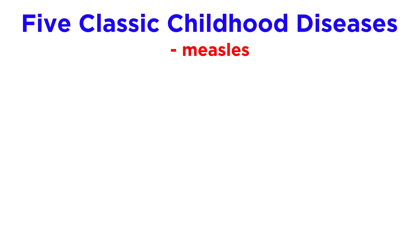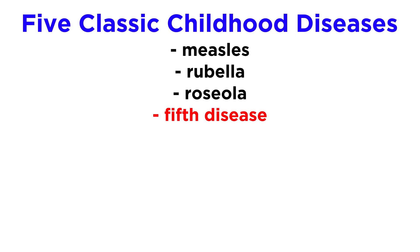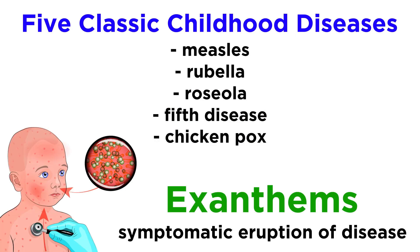To put things in context, measles is considered to be one of the five classic childhood diseases, along with rubella, roseola, fifth disease, and chickenpox. These diseases are also called exanthems, a word that refers to an eruptive disease, or symptomatic eruption of disease.